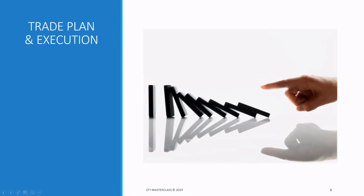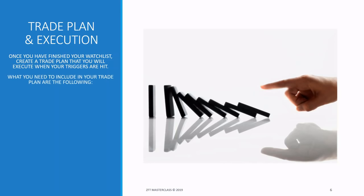For trade plan and execution: once you've finished your watch list, create a trade plan to execute when your triggers are hit. What you need to plan: number one is your buying — where, when, and how. Especially your tranching needs to be detailed. Saying 'I'll buy when it breaks out' answers when and where, but 'how' is a different question — you need to decide whether to buy before or after the breakout.